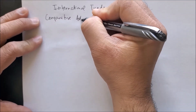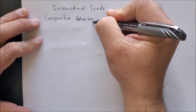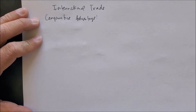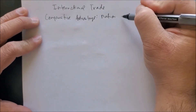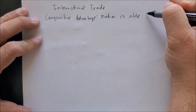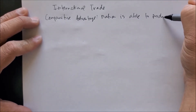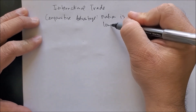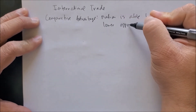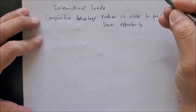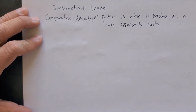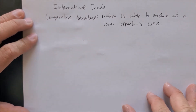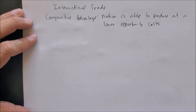Comparative advantage, by definition, is when a country or nation is able to produce at a lower opportunity cost. That would be the country's comparative advantage. For example, let's look at two goods: apples and oranges.